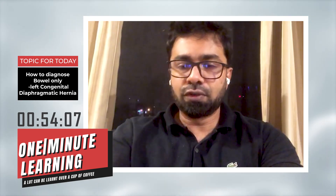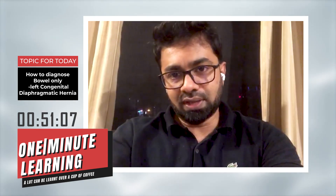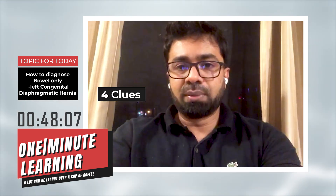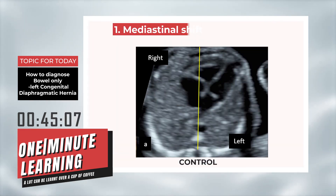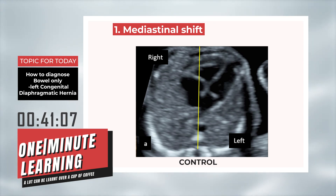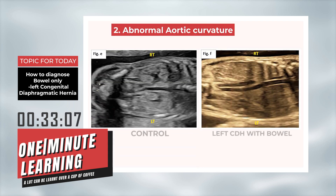I'm going to give you four clues that can come in very handy in this regard. First, there would be a mediastinal shift to the right — anything herniating into the left side of the thorax is going to cause a mediastinal shift to the right, and small bowel alone is no exception to this rule.